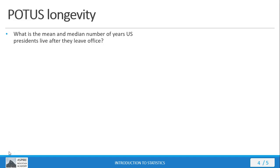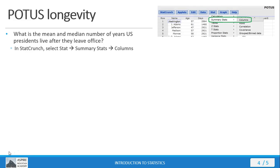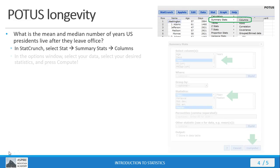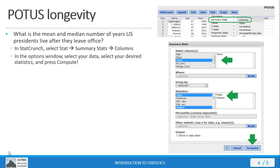Okay, once your data is in StatCrunch, you want to go to Stat, Summary Stats, Columns. In the Options window, you want to select the column with your data, select the mean and median stats to calculate, and press Compute. Here's what comes out. If you didn't get this, pause the video, go back to StatCrunch, try this again until you get it down.